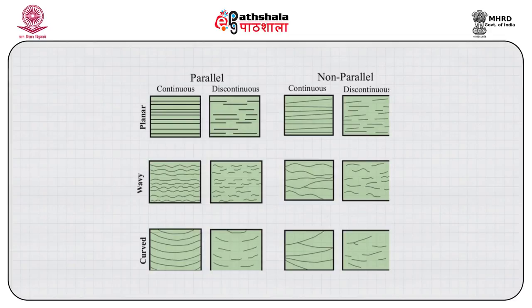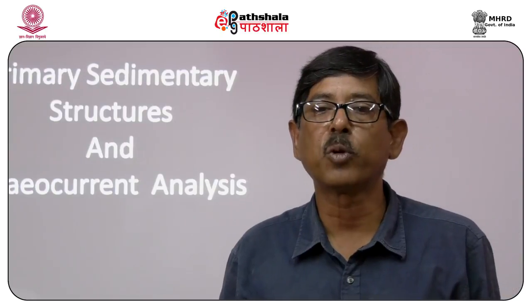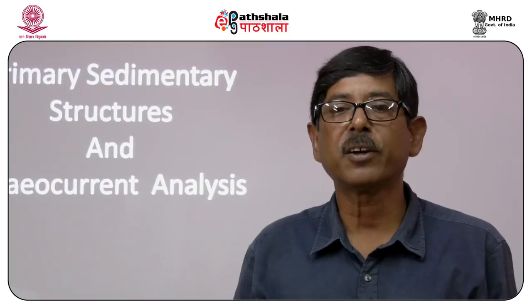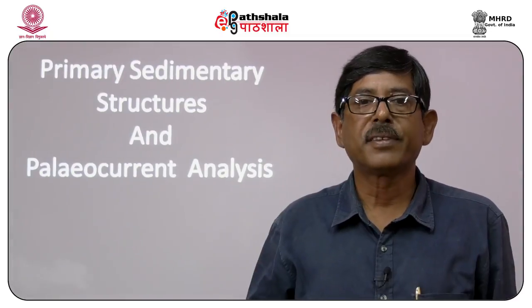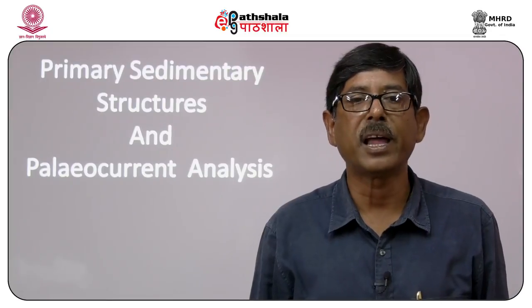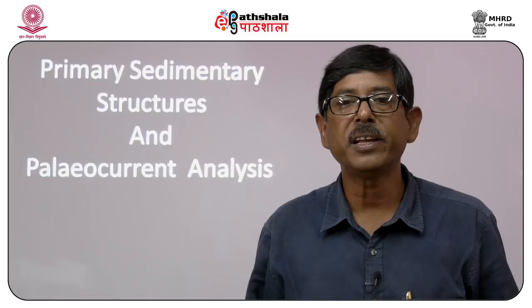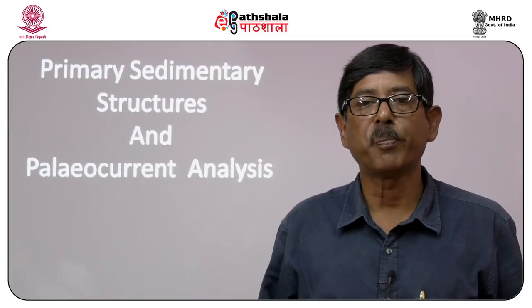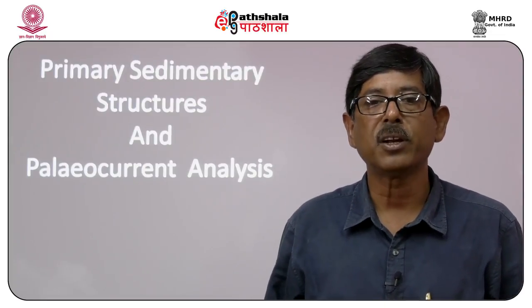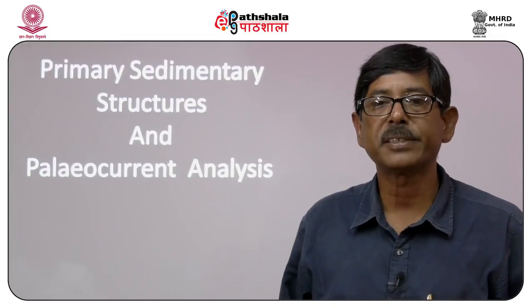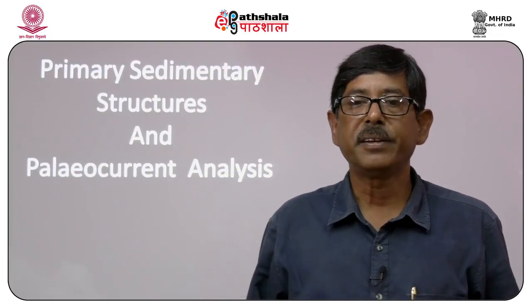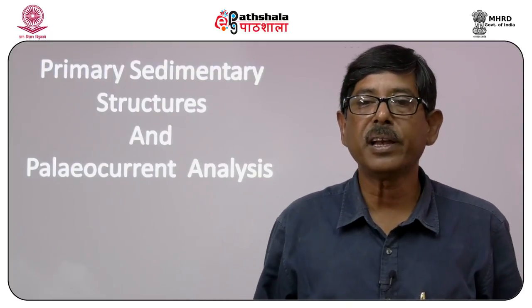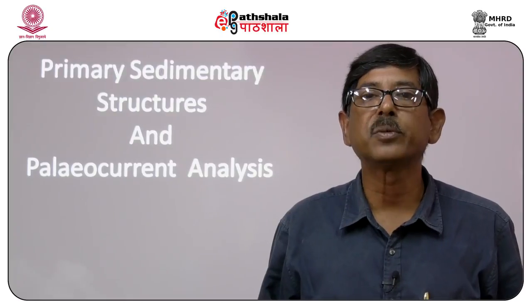Groups of similar beds or cross beds are called bed sets or sets. A simple bed set consists of two or more superimposed beds characterized by similar composition, texture and internal structure. A group of two or more sets is called a coset. Beds are produced under essentially constant physical, chemical and biological conditions. Rapid deposition by a single flow results in massive beds, while slow deposition leads to either graded or laminated beds. Laminated beds can be planar laminated or cross laminated.